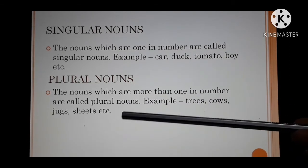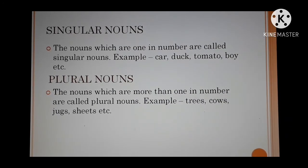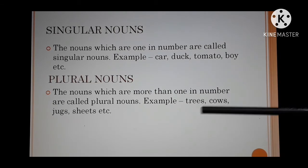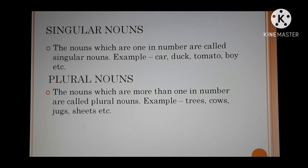Plural nouns are nouns which are more than one in number — they can be two, three, four, five, or any number greater than one. Examples: trees, cows, sheets. Simply adding 'S' is used to form the plural in many cases. However, there are certain rules for converting singular nouns to plural nouns, and we don't always simply add S.